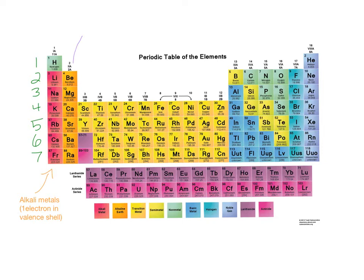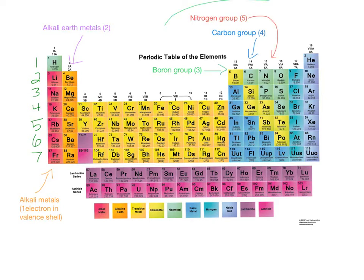The second column has the alkali earth metals, which are less reactive than the alkali metals and have two electrons in their valence shell. The next four groups are named after the element that is at the very top of the column. So you have the boron group with three electrons in its valence shell, the carbon group with four, the nitrogen group with five, and the oxygen group with six.